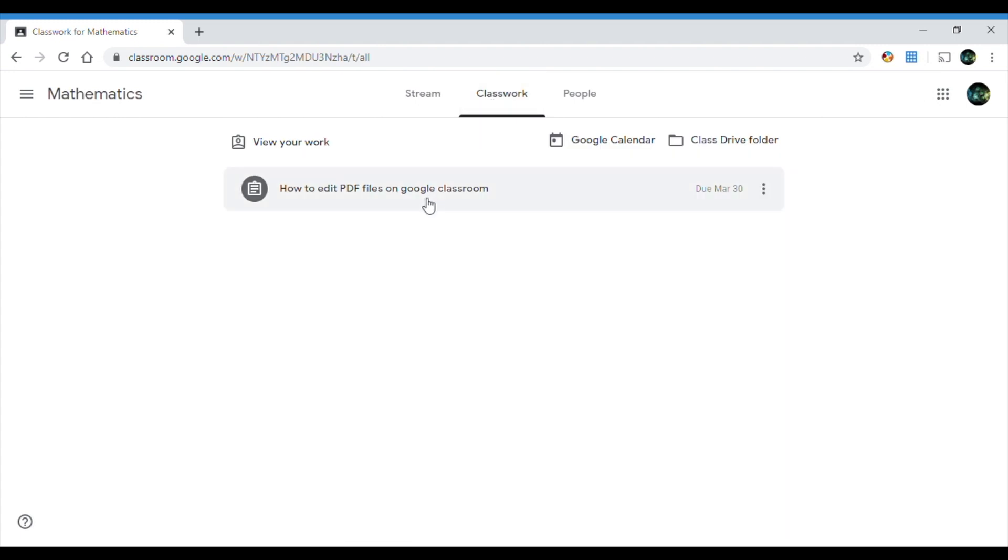There it is. So here's my first assignment for this week. It's due on March the 30th. So I'm gonna click on that and I can see when the teacher uploaded it at 9:36 a.m. You can see that they left me instructions. Watch this video to learn how to edit your PDF files, Google Classroom, and it has my name. This is awesome. So I'm gonna click where it says view assignment.